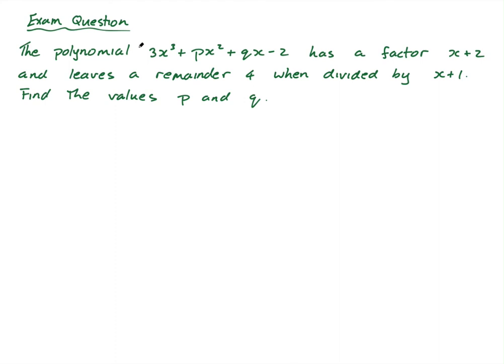It says the polynomial 3x cubed plus px squared plus qx minus 2 has a factor x plus 2 and leaves a remainder 4 when divided by x plus 1. Find the values p and q. Now I told you this was a nice question. Once you get the hang of it, you will see that it is a nice question. The polynomial has a factor x plus 2. So that means f(-2) equals 0 because of the factor theorem. If it has a factor of x plus 2, then f(-2) must equal 0.